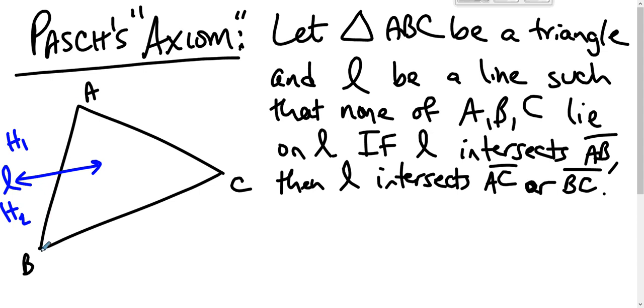A and B lie in opposite half planes. We can say without loss of generality A is in H1, B is in H2. The question is, where is C? C does not lie on line L, so it must lie either in H1 or in H2.